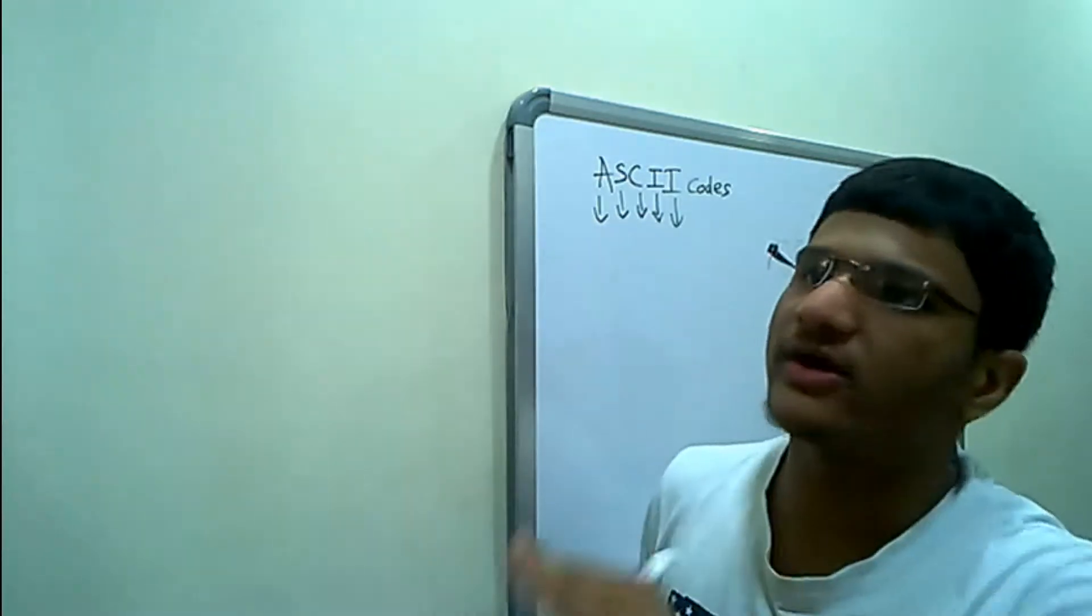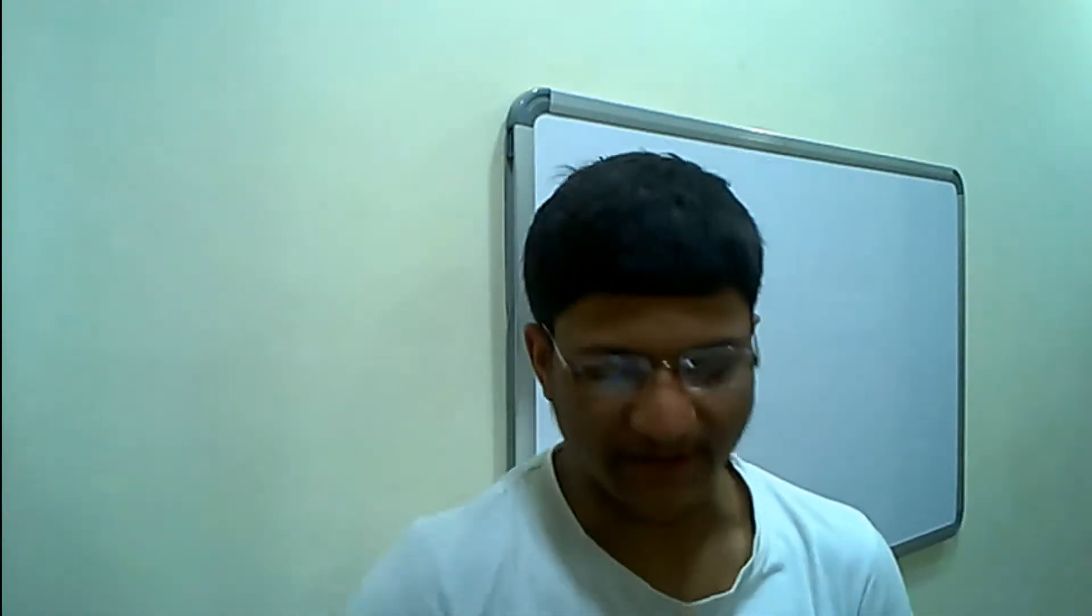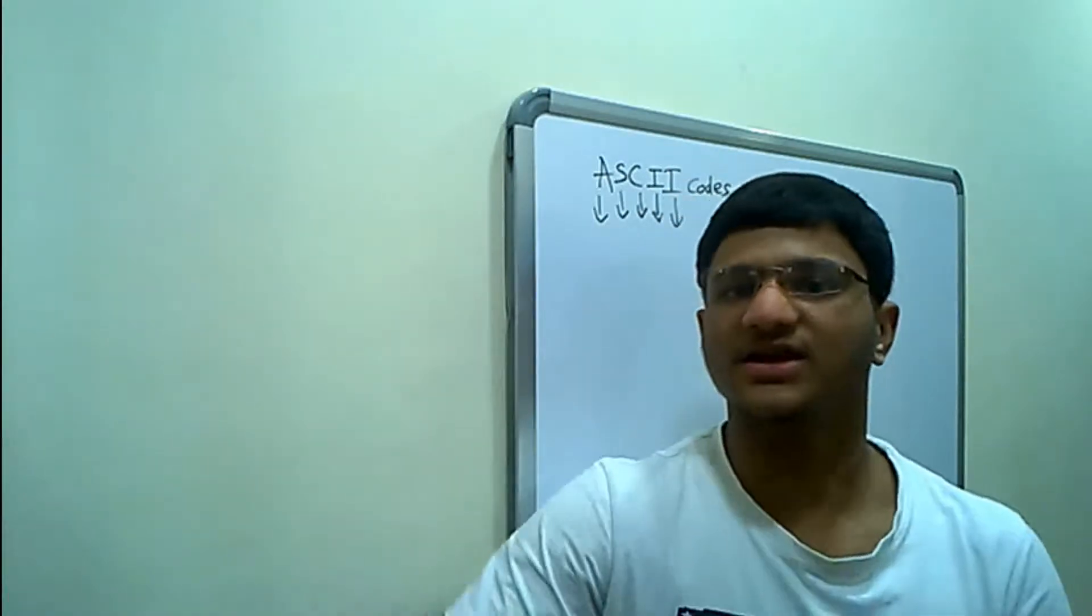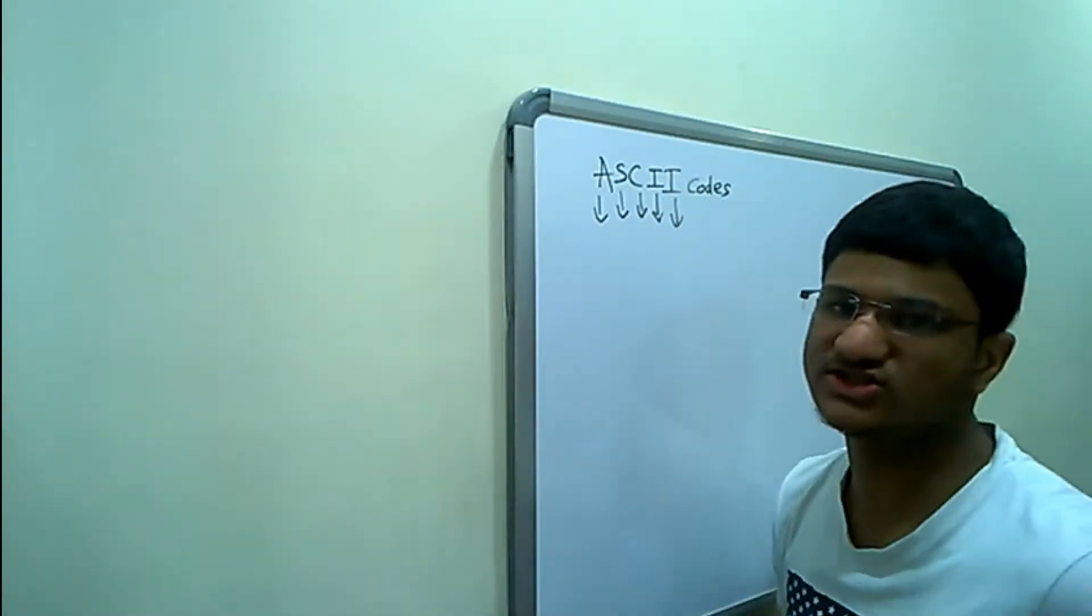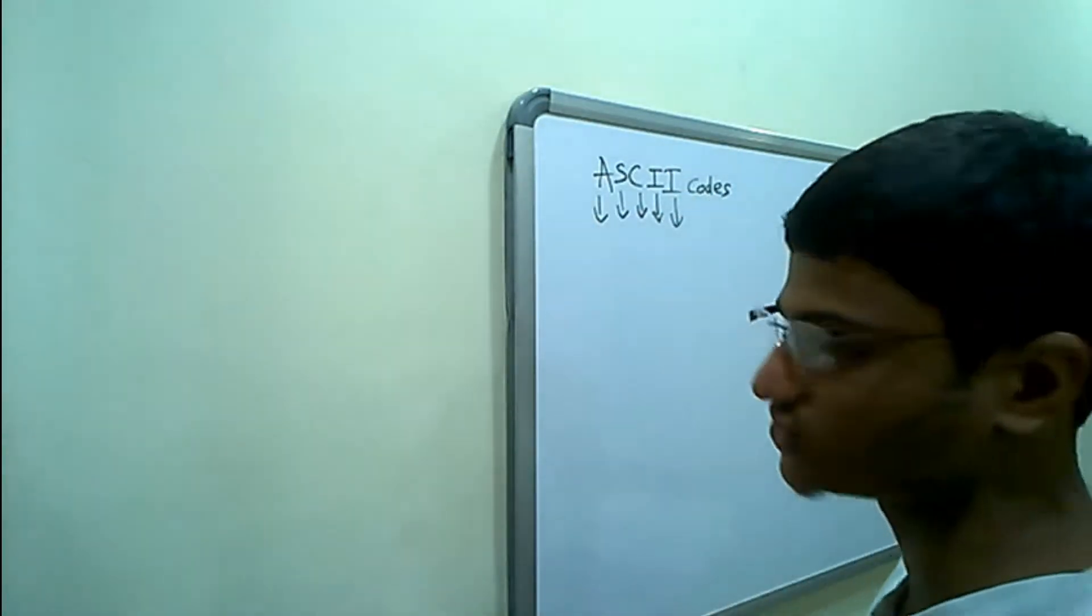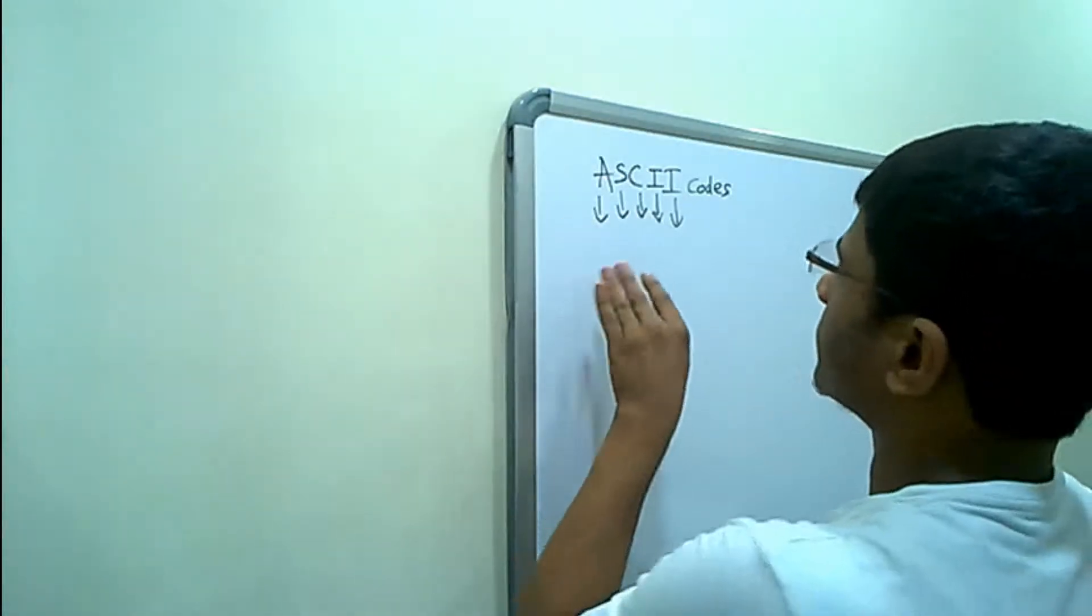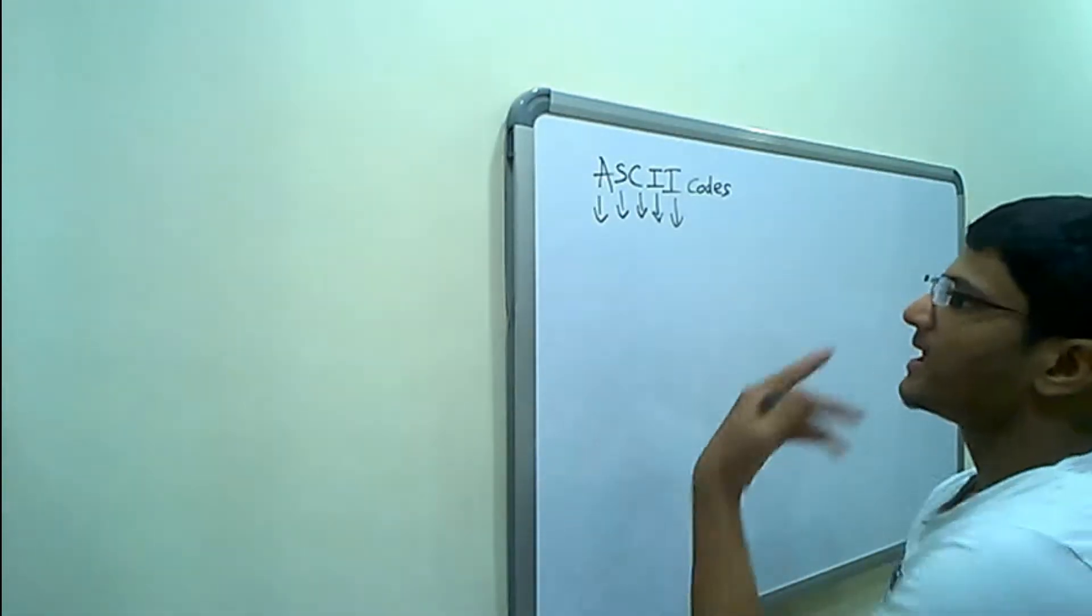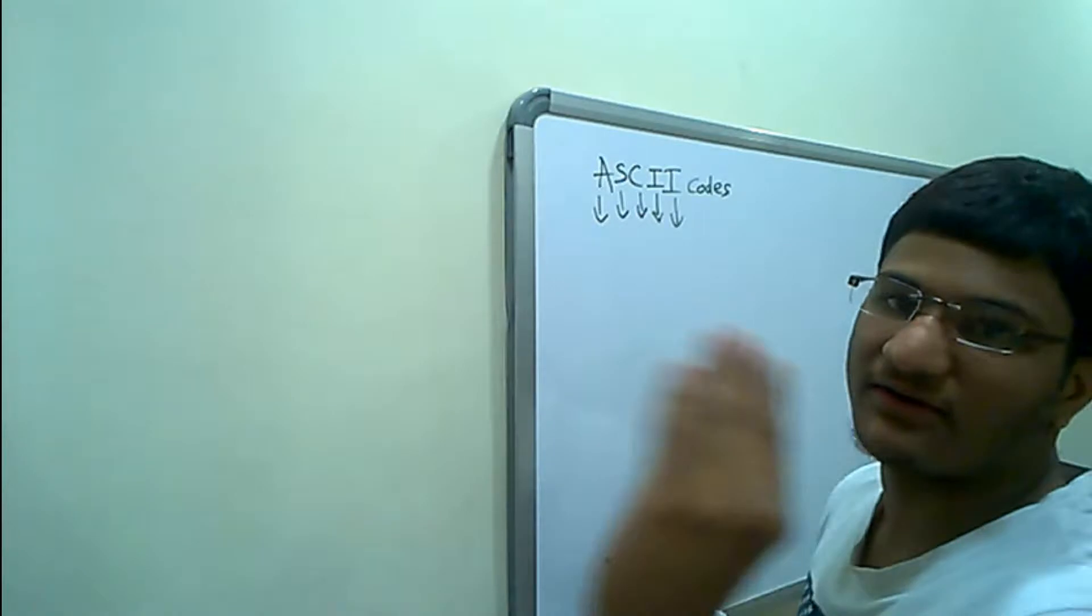ASCII codes are used by almost every input and output device - printers, monitors, scanners, anything. They use these ASCII codes for the standardization of results, displays, and outputs. What is the format of ASCII code? ASCII code is basically a seven-bit code.